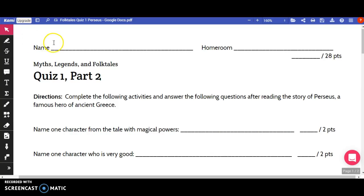Before you begin, please make sure that you put your name and your homeroom on the top of your paper. Notice that this quiz is worth a total of 28 points on top of the points already awarded to you in part one of the quiz.